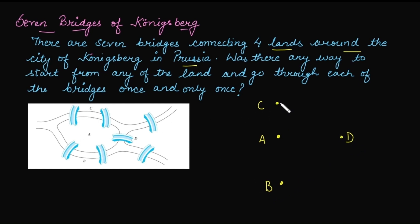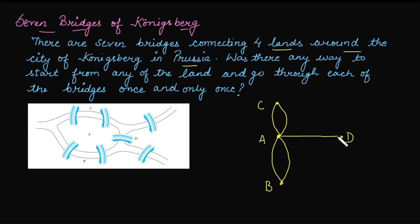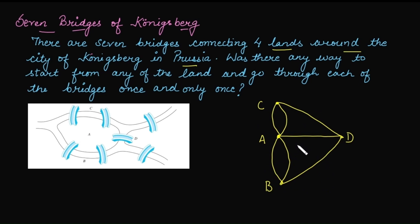We will model this problem as a graph, treating the cities as vertices: A, B, C, and D. Between city A and C there are two bridges, so we draw two edges. Between A and B there are two bridges, so two edges. There is one bridge between A and D, one between C and D, and one between B and D. Covering each bridge exactly once means we need to find an Euler path.